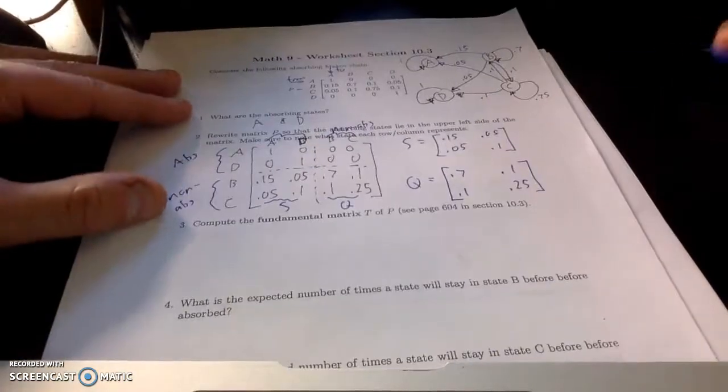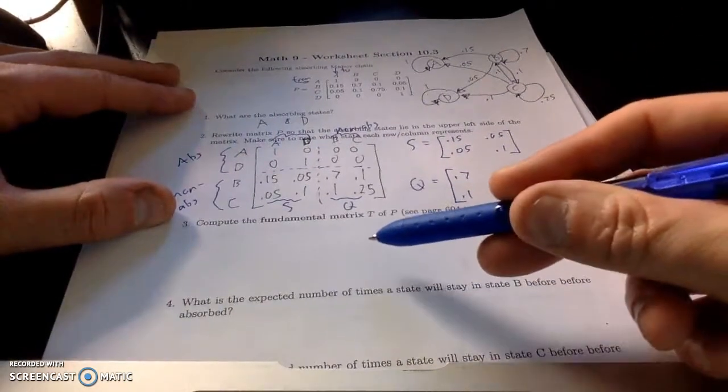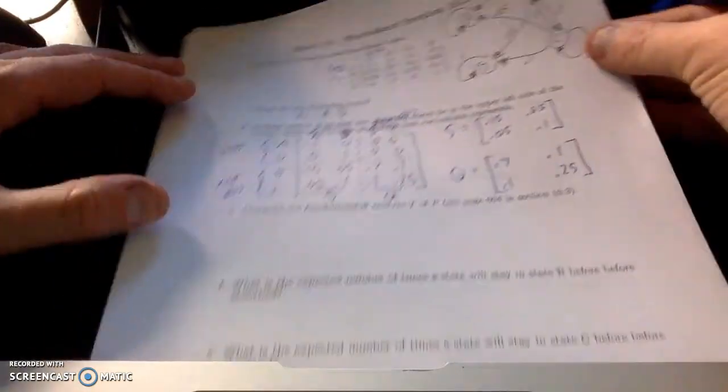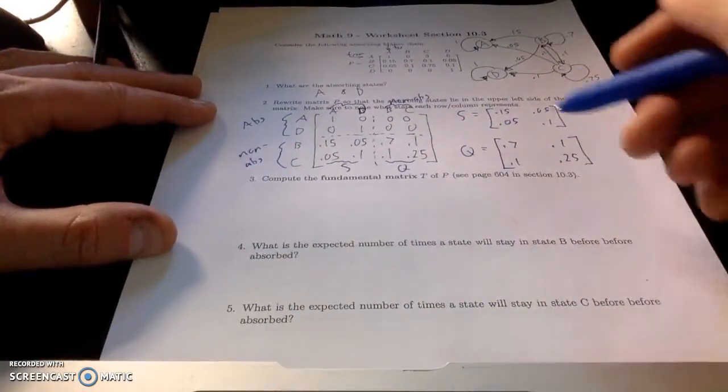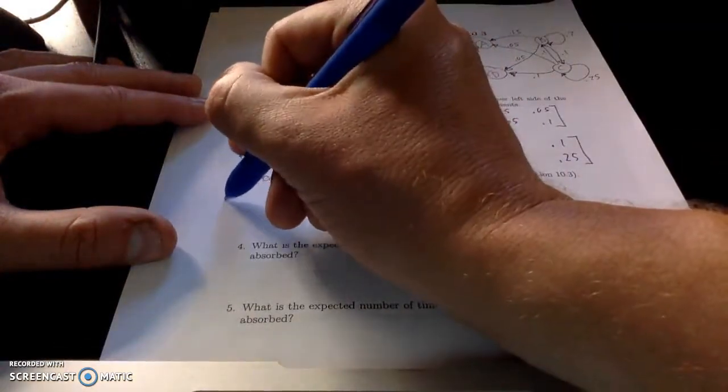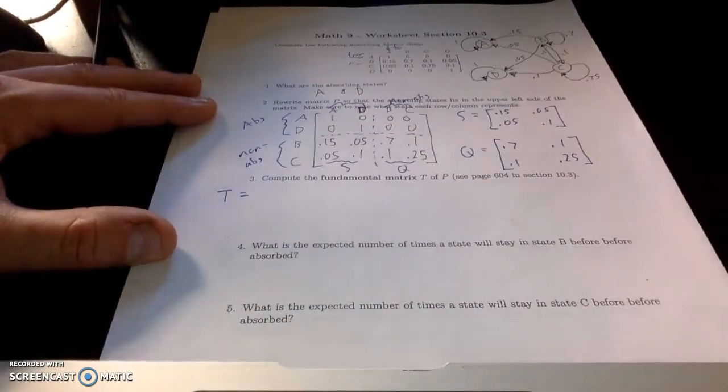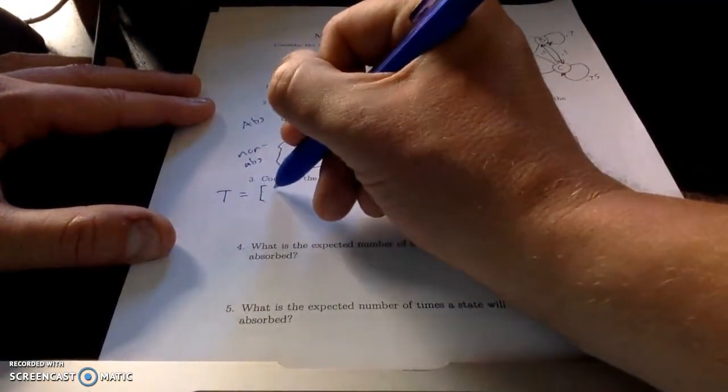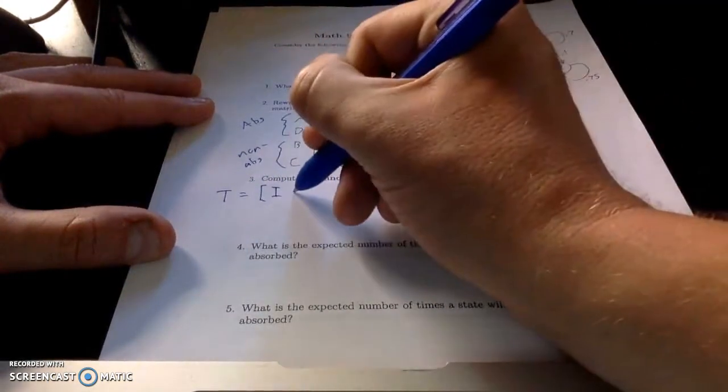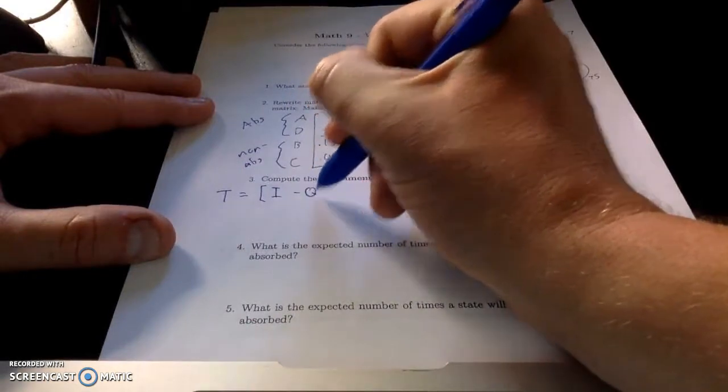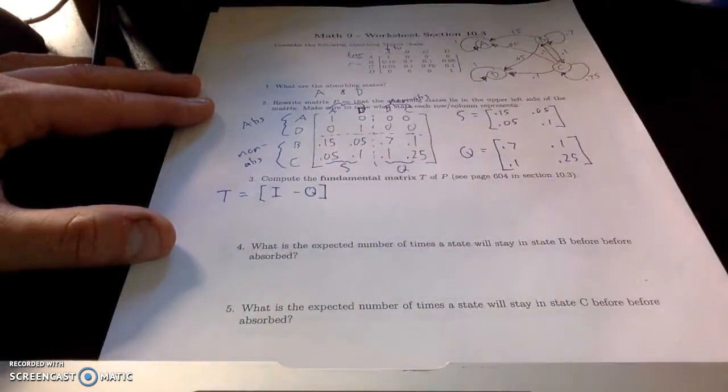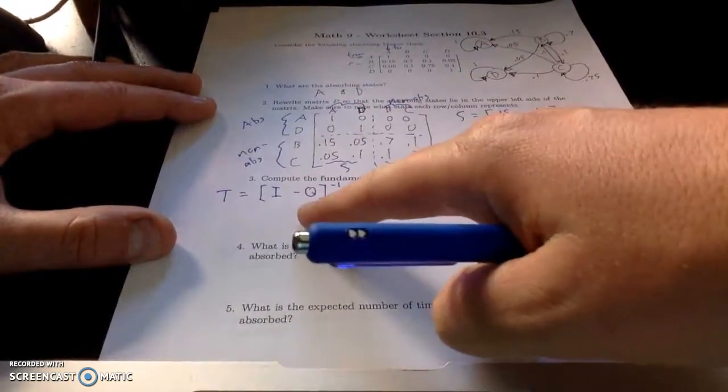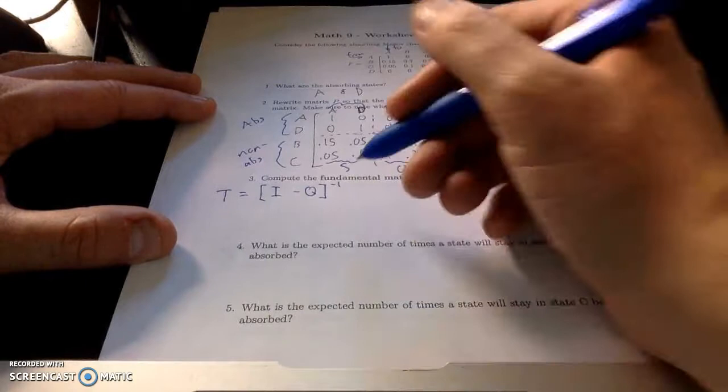And the fundamental matrix. Again, don't worry about memorizing this. Give yourself some good notes. Copy this down on your note sheet for the test. It's fundamental matrix T. The formula for this is we're going to take the identity matrix minus Q. Put the parentheses around there. And then compute the inverse of that matrix. So this is the formula. I'll write this down on a page of notes.